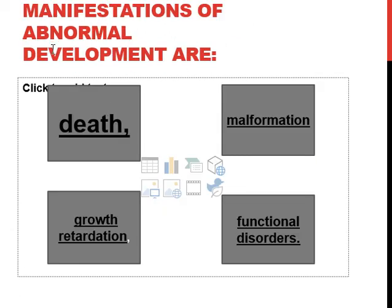The fifth principle is that the manifestations of abnormal development include death, malformation, growth retardation, and functional disorder. These five points — genotype, developmental stage, dose and duration, biochemical or molecular inhibition, and manifestation — are the principles of teratology.